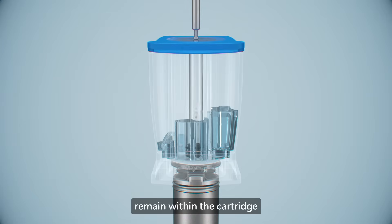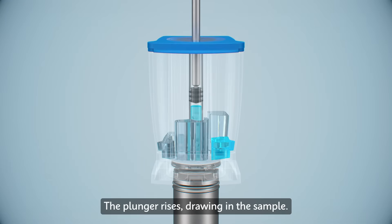All contents will remain within the cartridge throughout processing. A plunger lowers into the central tube, and the valve rotates to the first position. The plunger rises, drawing in the sample.